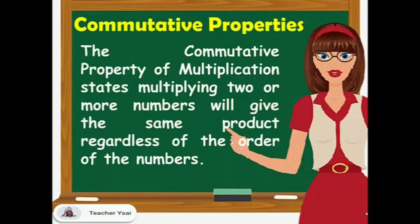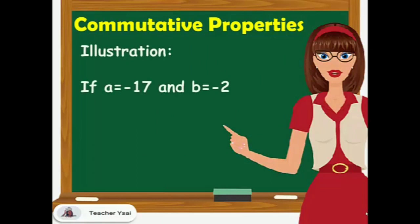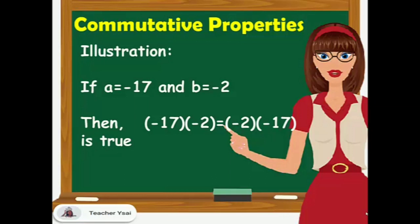The commutative property of multiplication states that multiplying two or more numbers will give the same product regardless of the order of the numbers. That is, the product of a and b is equal to the product of b and a. For example, if a equals negative 17 and b equals negative 2, then negative 17 times negative 2 is equal to negative 2 times negative 17.